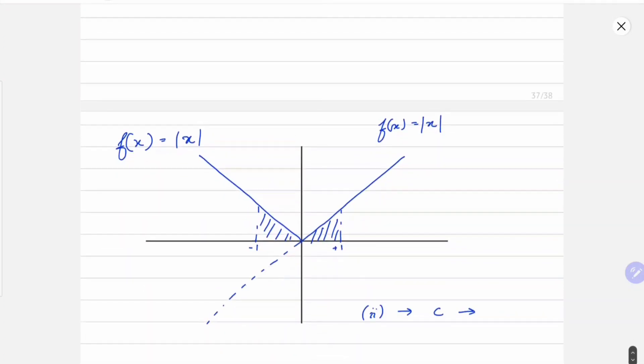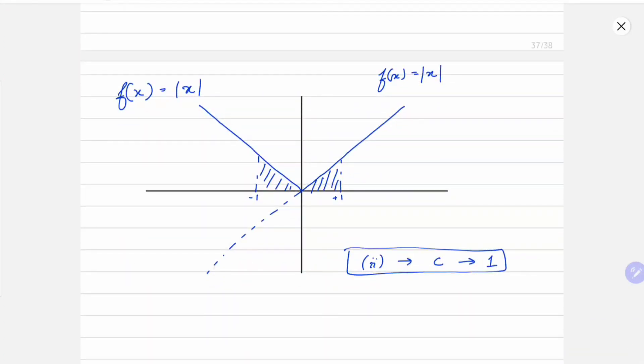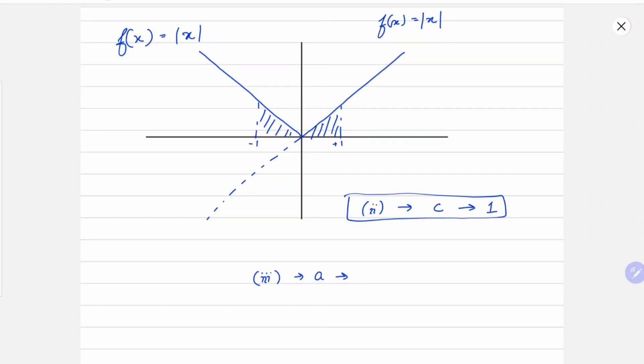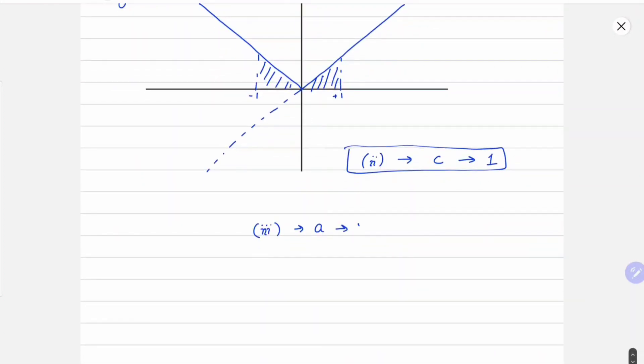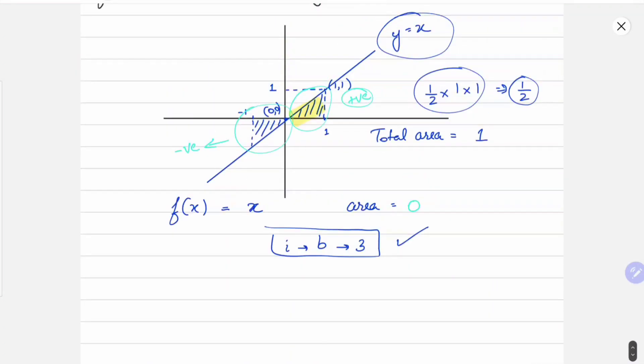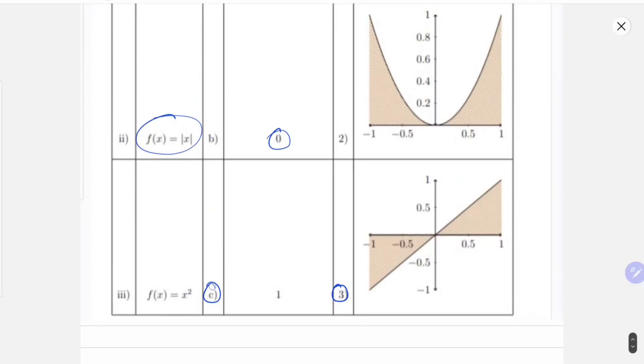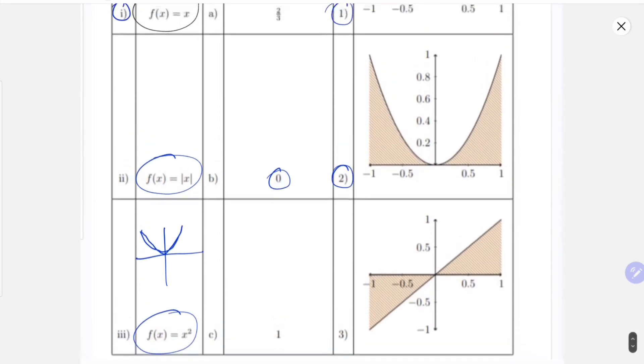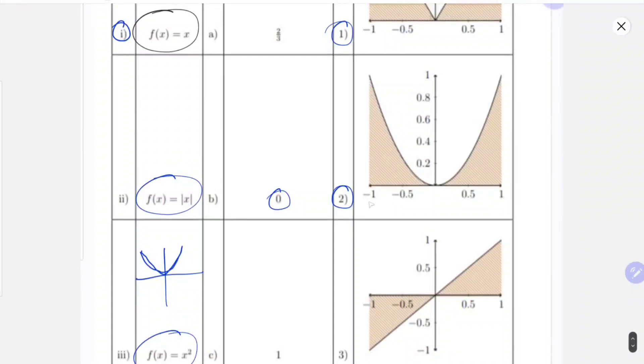Now since we have matched 2, for the third you can directly figure out that it is going to be 3, A, and what is left is 3, A, 2. But still let me show you the method. For the third one, f(x) equals to x squared. For x squared, the graph is parabolic, as it is visible in the second graph. We have to find the area from minus 1 to 1.